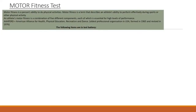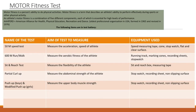Motor Fitness Test Battery: Name of test and aim. 50m Speed Test: measure the acceleration and speed of the athlete; equipment - speed measuring tape, cone, stopwatch, flat and clear surface. 600m Run Walk: measure the aerobic fitness of the athlete; equipment - running track, marking cones, recording sheets, stopwatch. Sit and Reach Test: measure the flexibility of the athlete; equipment - sit and reach box, measuring tape. Partial Curl Up: measure the abdominal strength of the athlete; equipment - stopwatch, recording sheet, non-slipping surface.